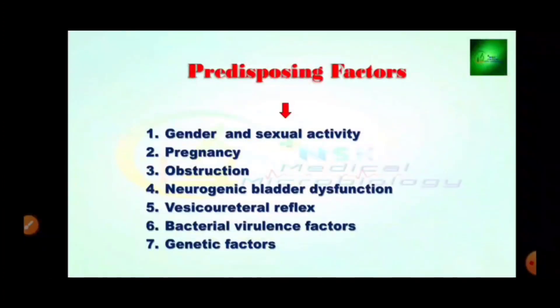The next topic covers predisposing factors which affect urinary tract infection. The first factor is gender — UTI infections are most commonly present in females compared to males. The second is sexual activity and pregnancy. The third is obstruction — a ureteral obstruction is a blockage in one or both of the tubes (ureters) that carry urine from the kidney to the bladder. It is treatable. The fourth is neurogenic bladder dysfunction, caused by harmful bacteria, viruses, and yeast growing in the urinary tract.